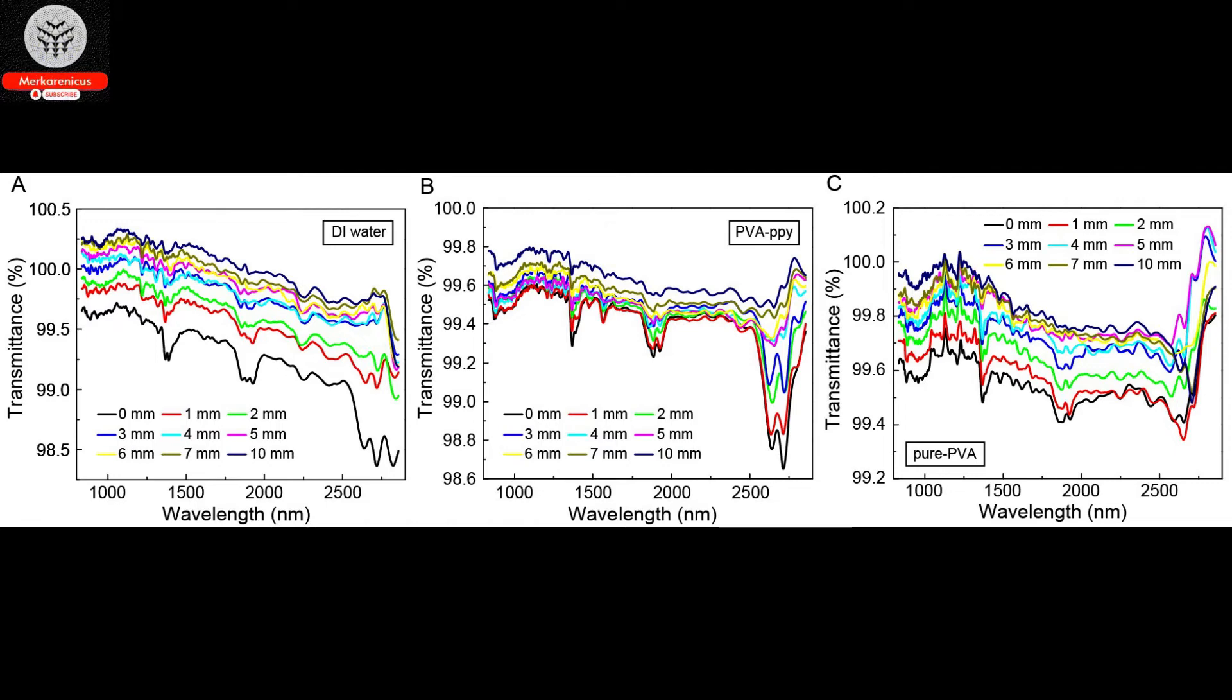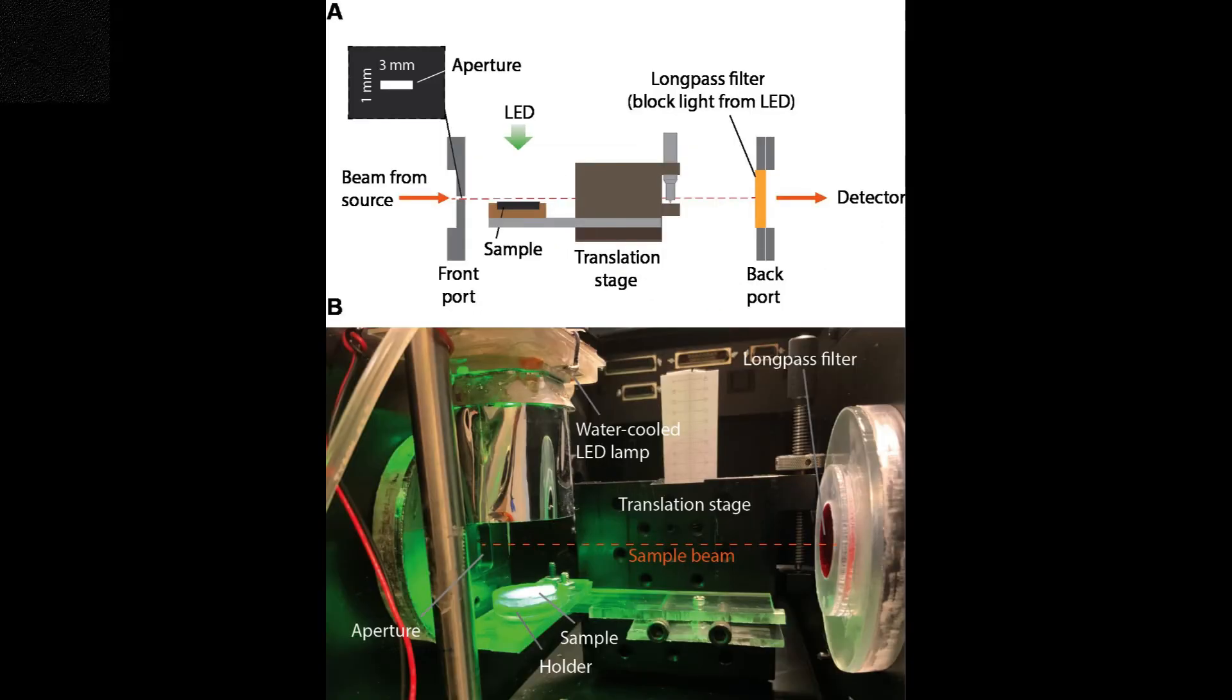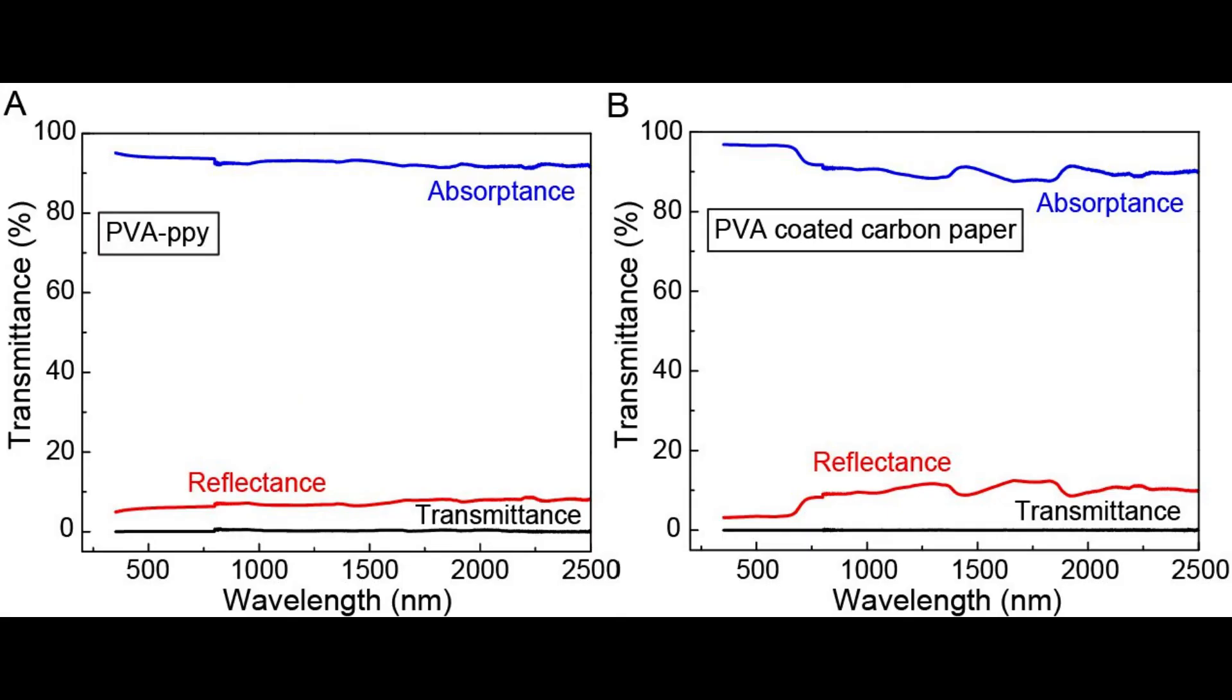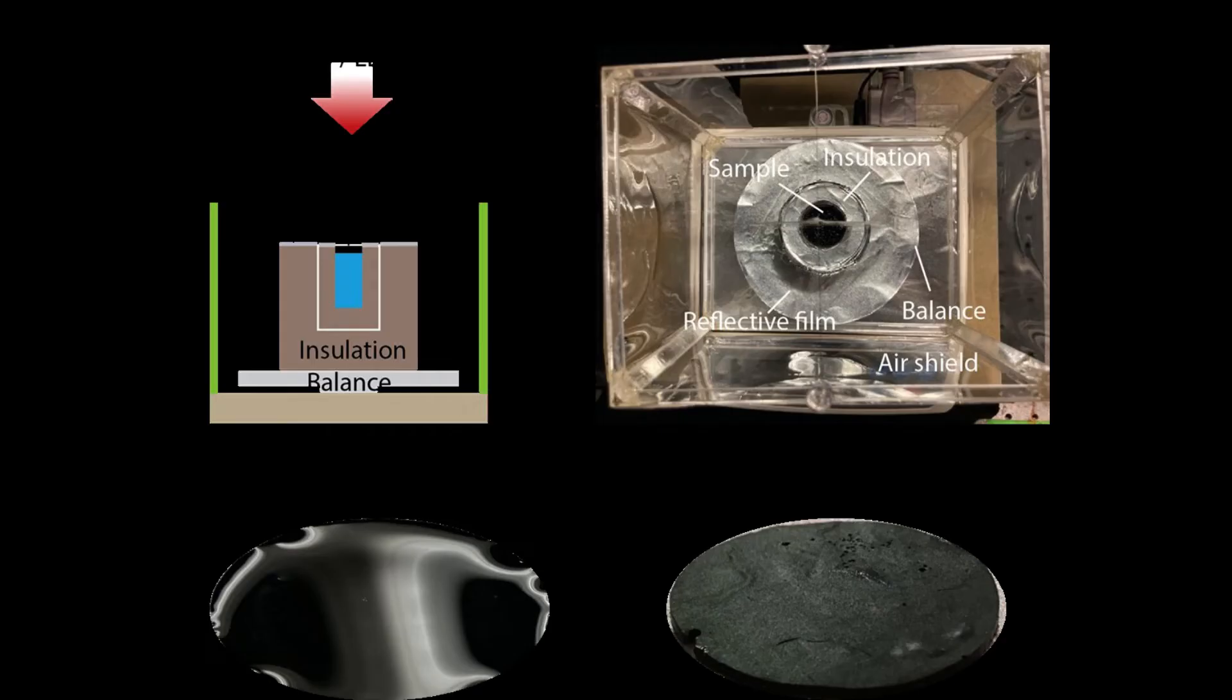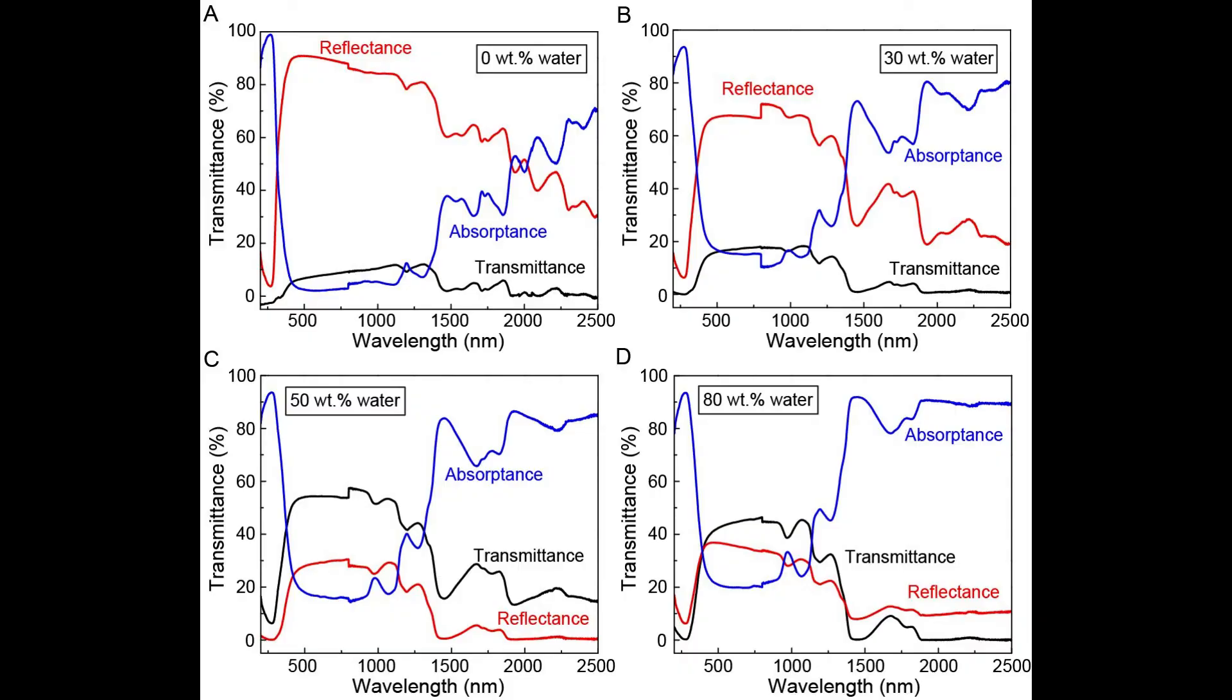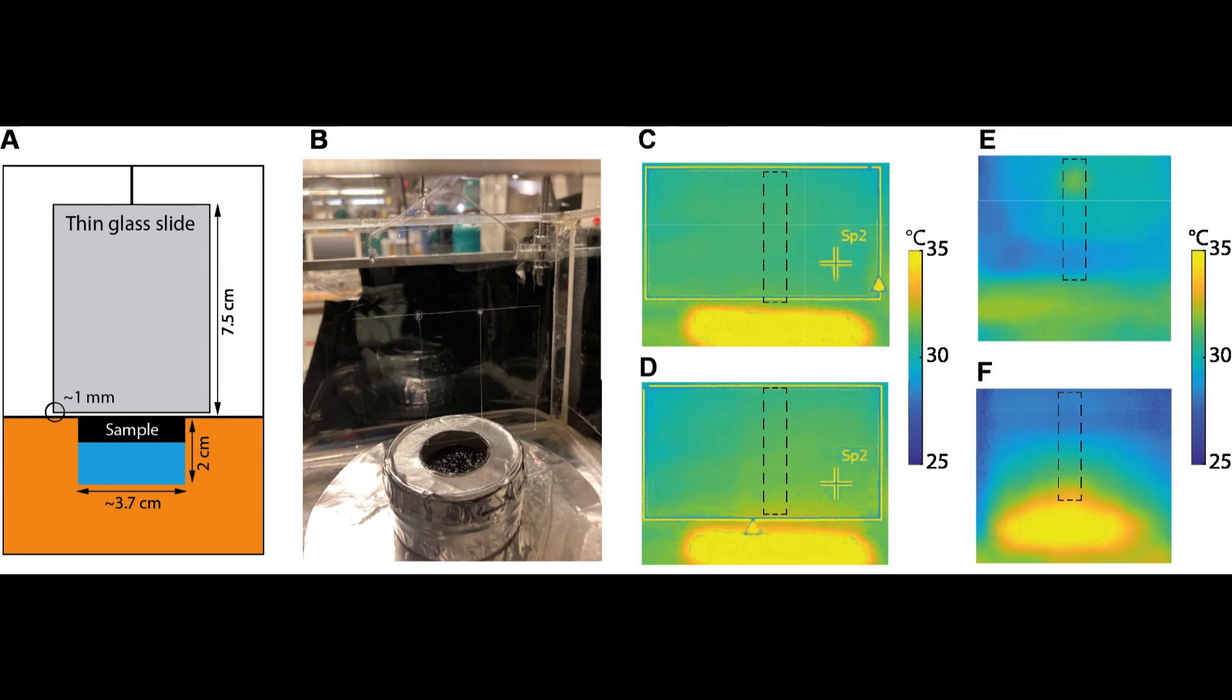The researchers have coined the term photomolecular effect to describe their discovery and are currently exploring ways to implement it in practical applications. Their focus is on utilising this phenomenon to enhance the effectiveness of desalination systems that are powered by solar energy, and they have received funding from the Abdul Latif Jameel Water and Food Systems Lab to conduct research on this topic. Additionally, they have been awarded a grant from Bose to study the potential impact of this effect on climate change modelling.